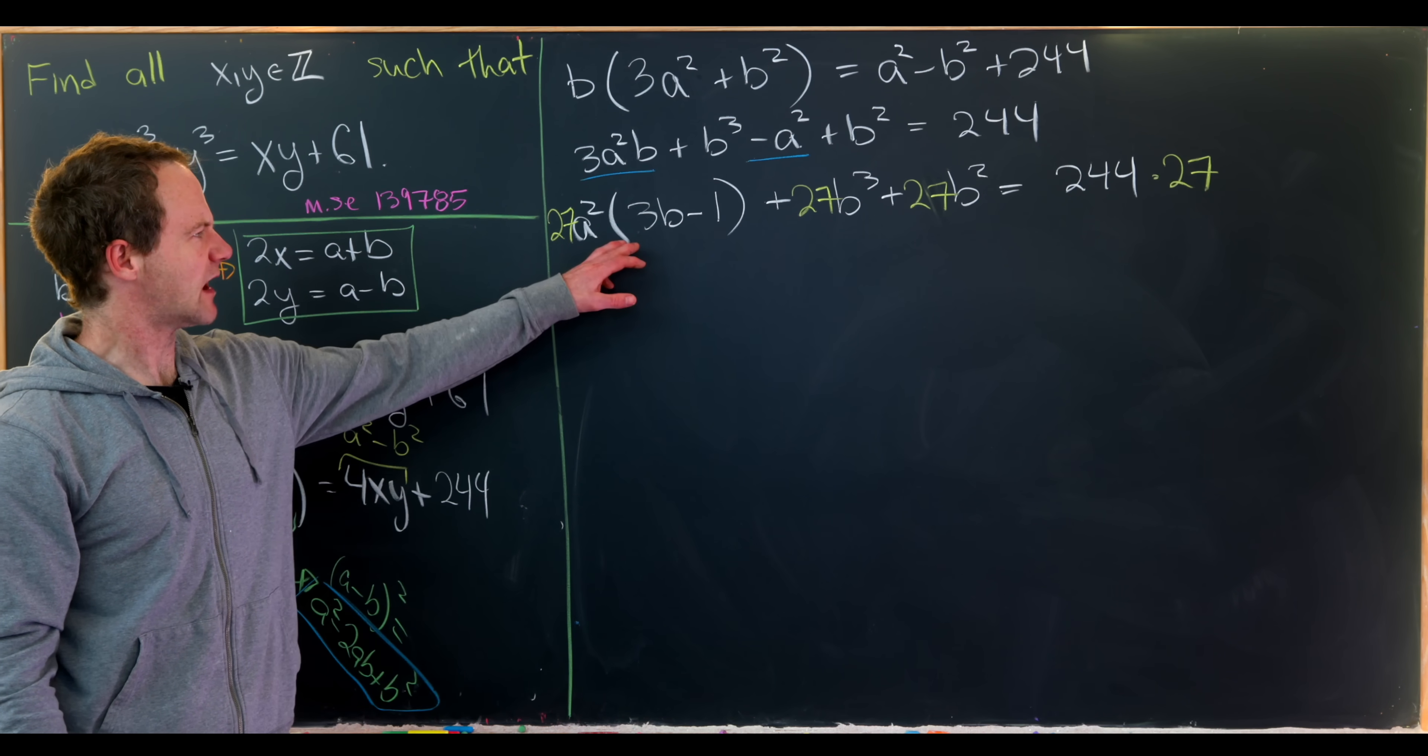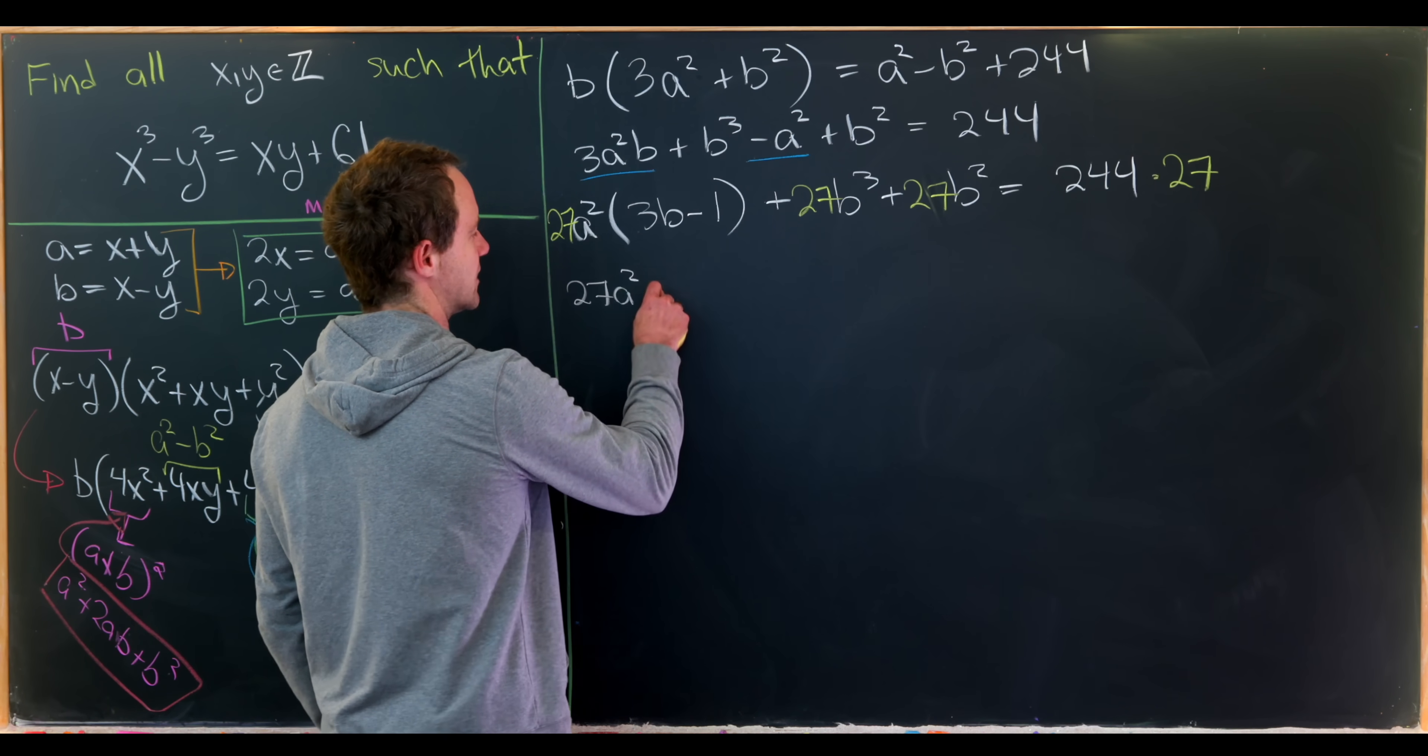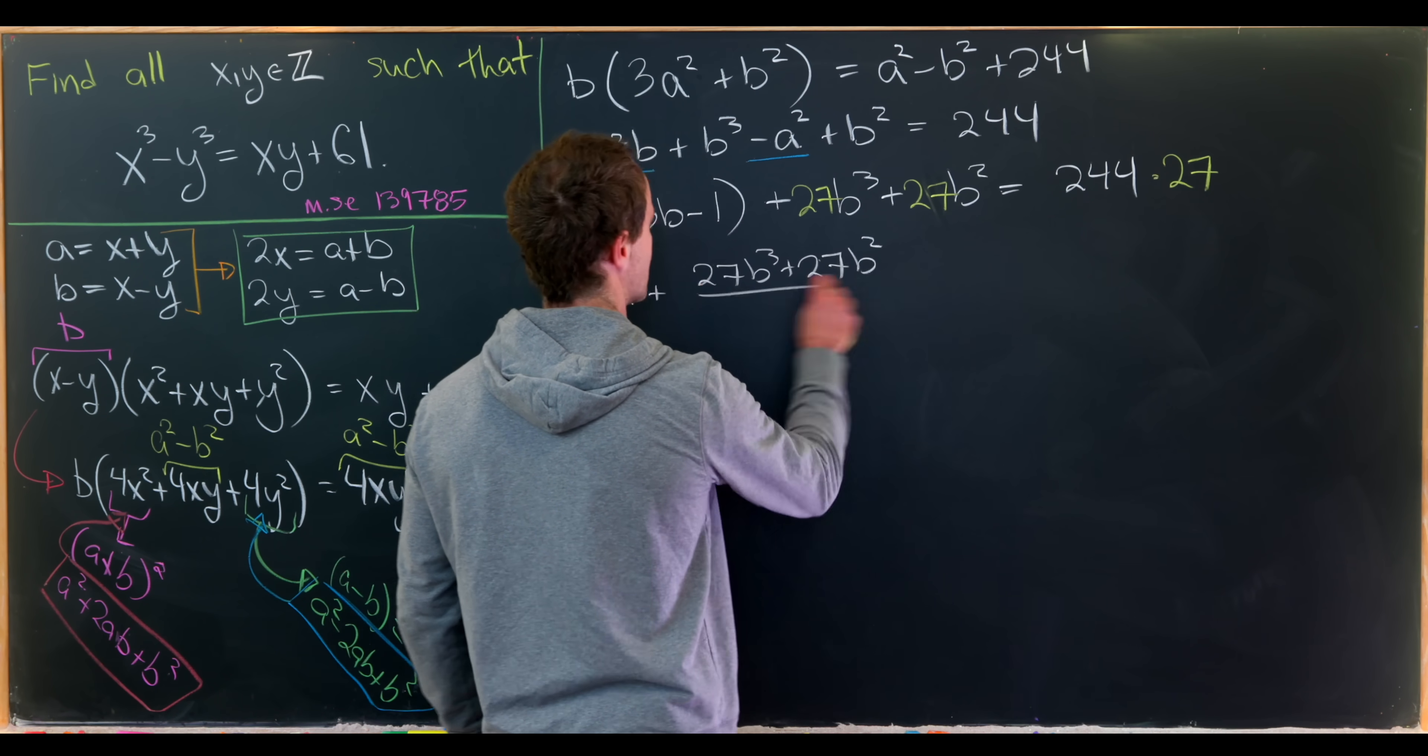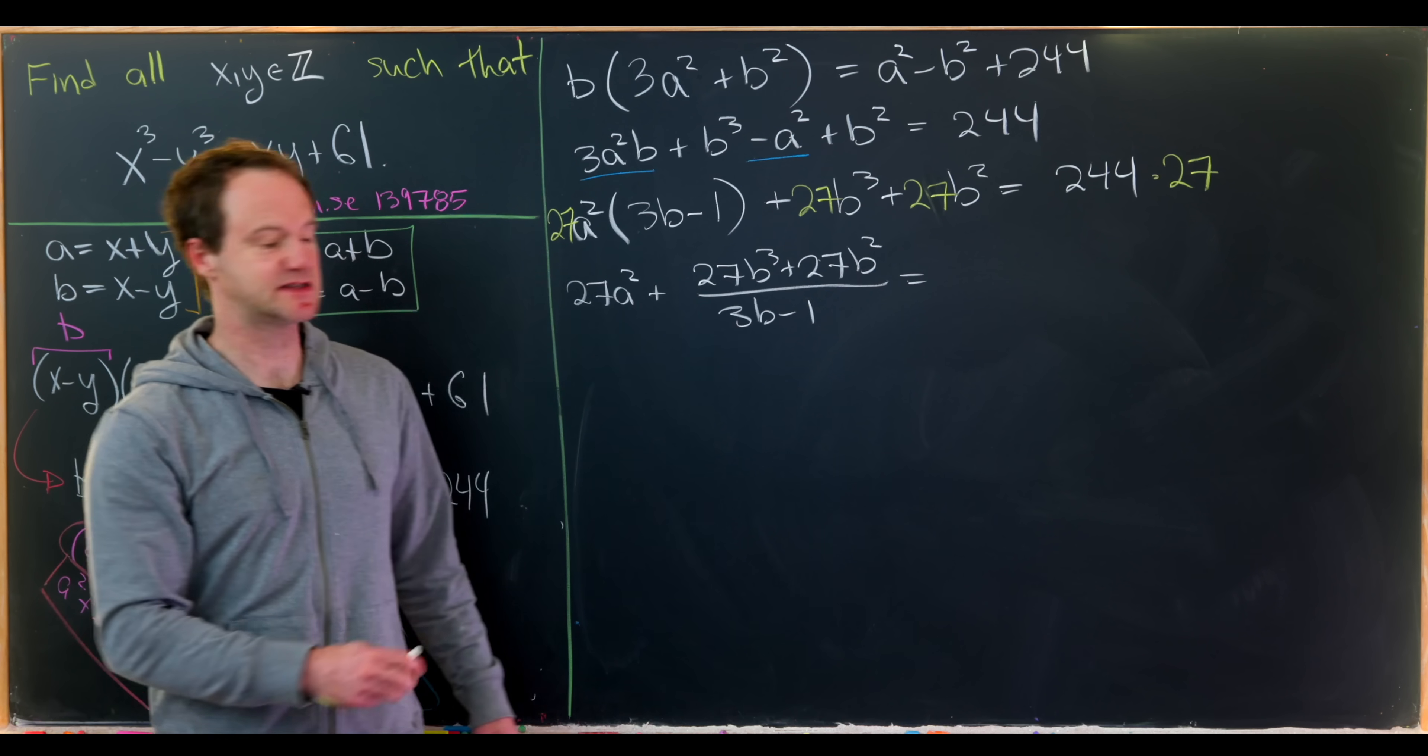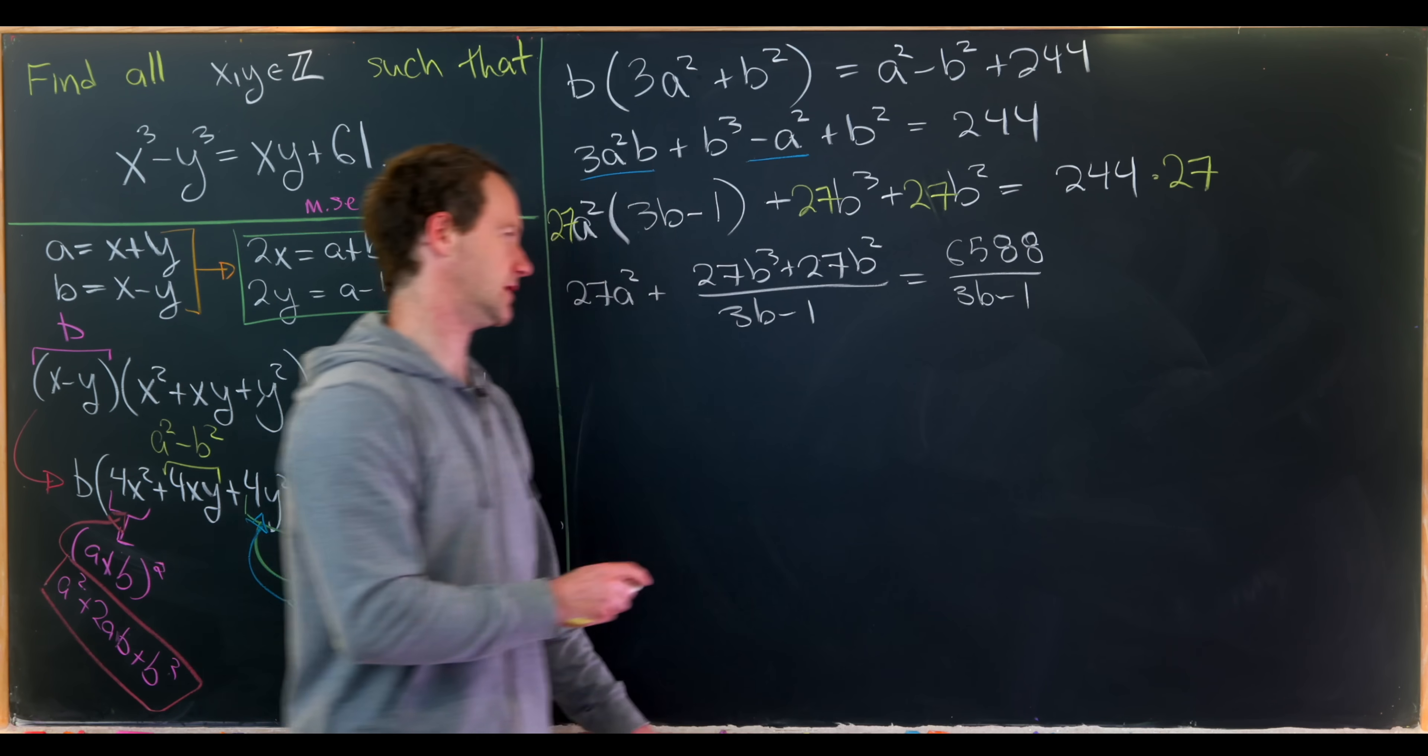Now let's divide everything by 3b minus 1. That leaves us with 27a squared plus 27b cubed plus 27b squared over 3b minus 1 equals 244 times 27, which is 6588, over 3b minus 1.